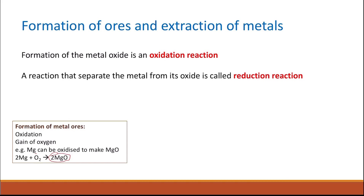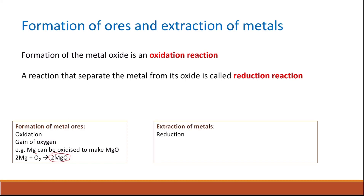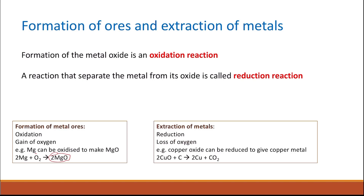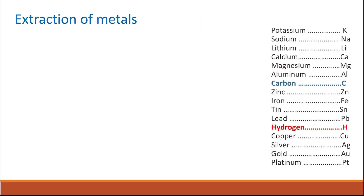A reaction that separates the metal from its oxide is called a reduction reaction — there is a loss of oxygen. For example, copper oxide can be reduced to give copper metal, producing copper and carbon dioxide.